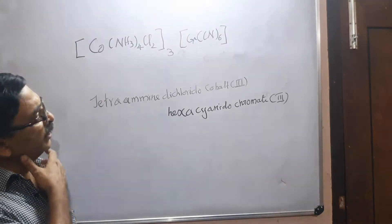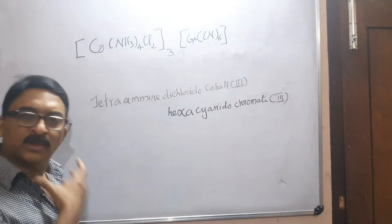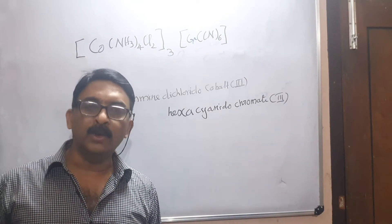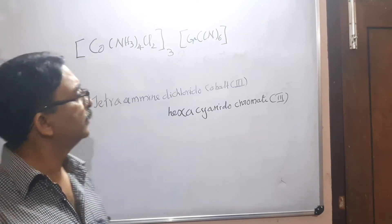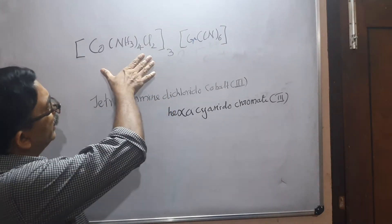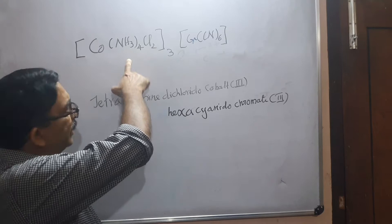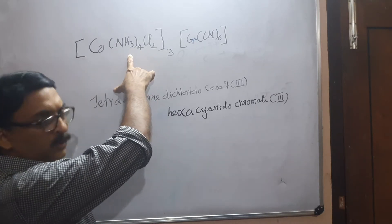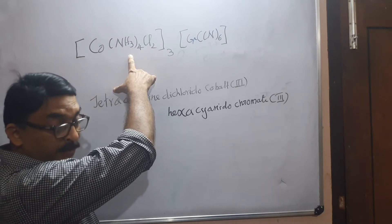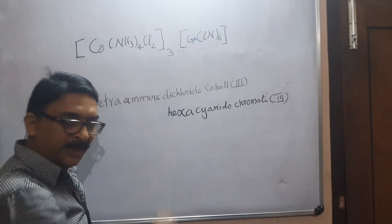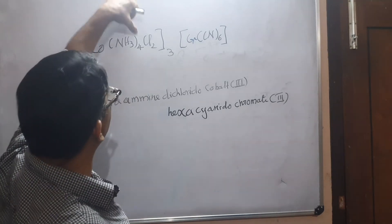How to name this complex where both cation and anion are complexes? When you name the cationic complex, as usual you have to mention the names of the ligands in alphabetic order along with their numbers.